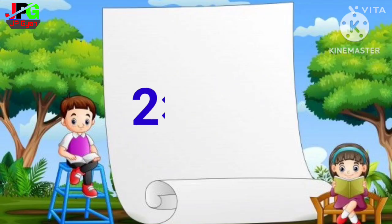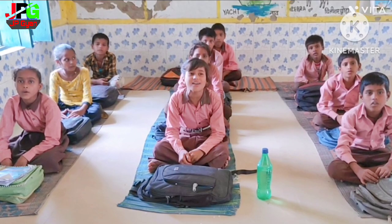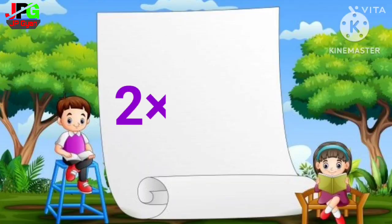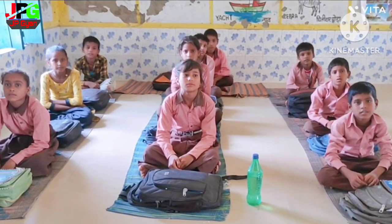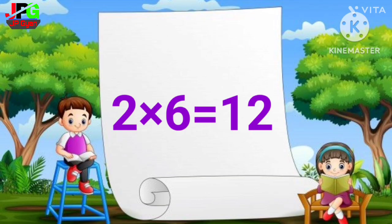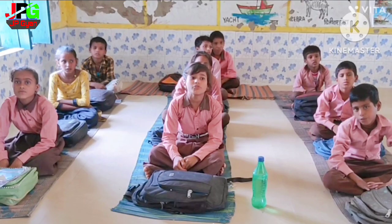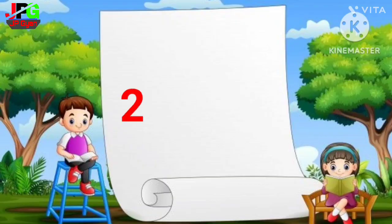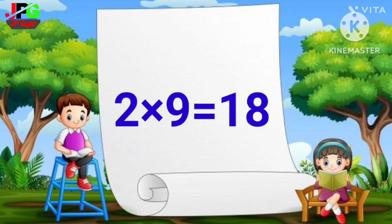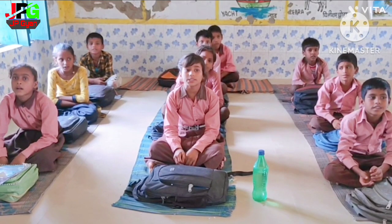2 1s are 2, 2 2s are 4, 2 3s are 6, 2 4s are 8, 2 5s are 10, 2 6s are 12, 2 7s are 14, 2 8s are 16, 2 9s are 18, 2 10s are 20.